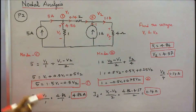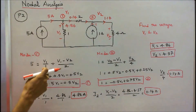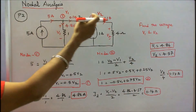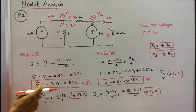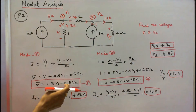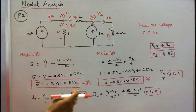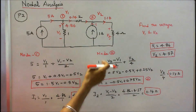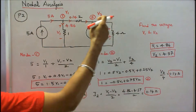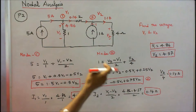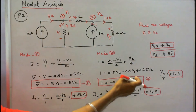At node 1: 5 equals V1 by 1 plus (V1 minus V2) divided by 2. Simplifying gives: 5 equals 1.5 V1 minus 0.5 V2, which is equation 1. At node 2: 1 equals (V2 minus V1) divided by 2 plus V2 by 4. Simplifying gives: 1 equals minus 0.5 V1 plus 0.75 V2, which is equation 2.